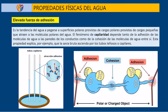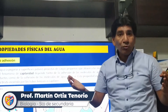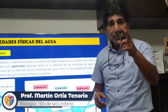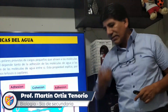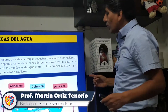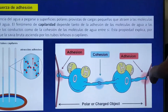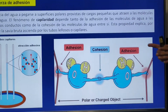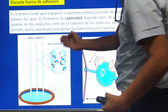El agua asciende sin que nadie le aplique una fuerza especial. Eso se puede ver cuando colocas una cañita en una botella de agua: el agua solita lentamente empieza a ascender. Esta propiedad se llama capilaridad, y también se observa en nuestros vasos sanguíneos. Las moléculas están cohesionadas y a la vez adheridas a la pared del tubo.